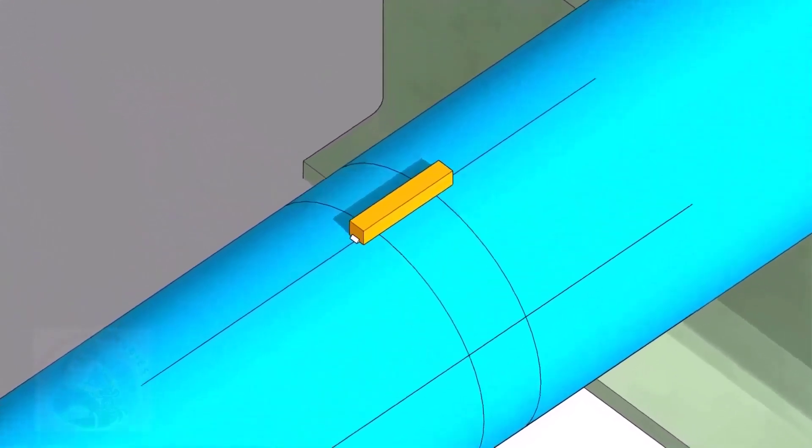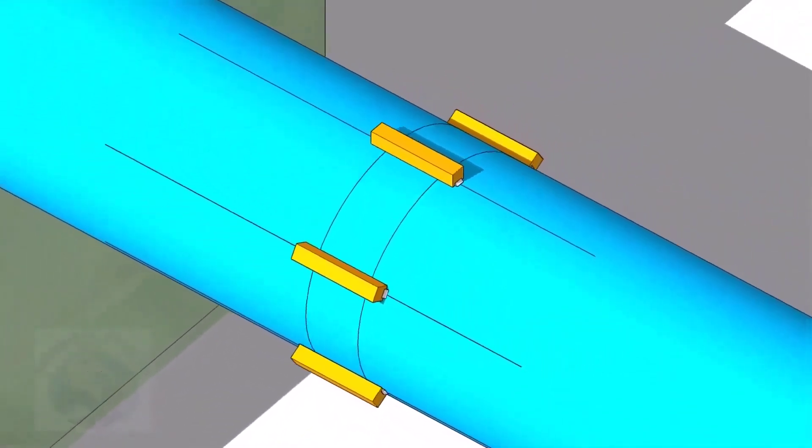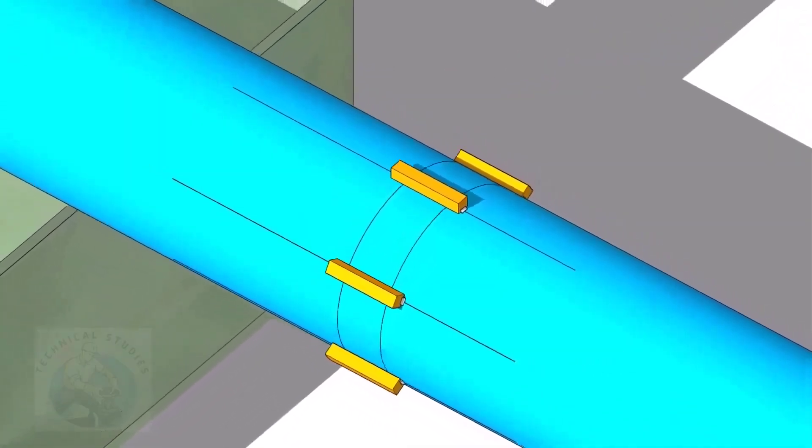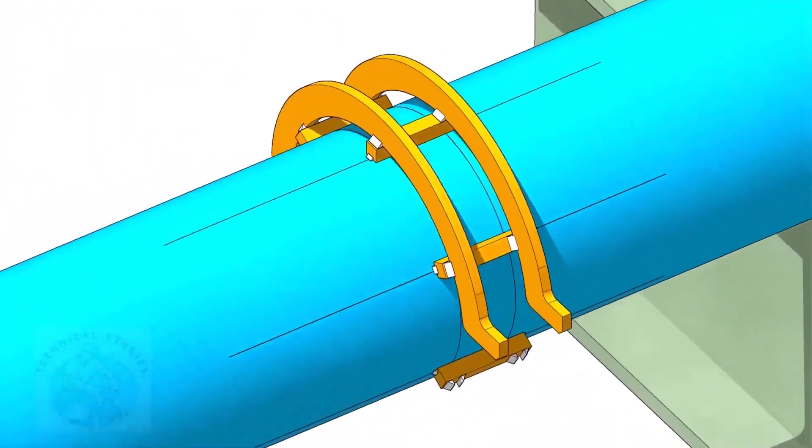Tack weld the square bars on the pipes as shown. Do not weld too big tacks. Tack weld the top half rings carefully on the square bars.